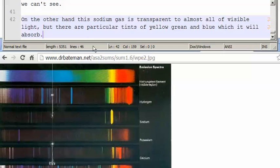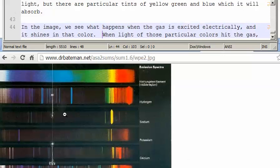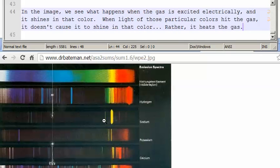On the other hand, this sodium gas is transparent to almost all of visible light. But there are particular tints of yellow and blue and green which it will absorb. In the image, we see what happens when the gas is excited electrically and it shines in that color. When light in those particular colors hit the gas, it doesn't cause it to shine in that color. Rather, it heats the gas.